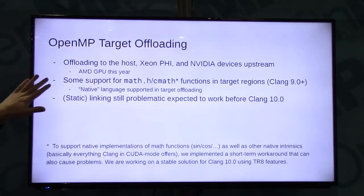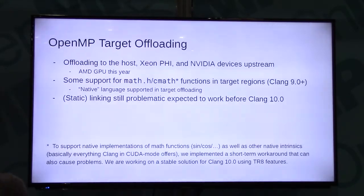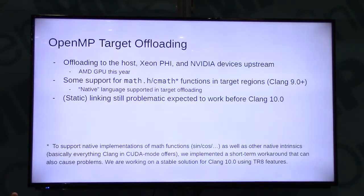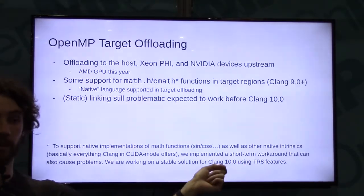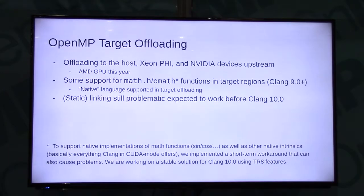There is a caveat: the way we enabled math function support caused a problem where some math functions work, but sometimes you run into really complex errors where you have to manually declare symbols or not. It's a little weird, and it will be fixed as soon as we implement one of the TR8 features. We got it into TR8, which will be the 5.1 standard, and one of those features is actually implementing the OpenMP implementation for math functions. Static linking is still a little bit problematic — we're working on that actively to do static linking, multi-target fat binaries, and all those fancy things.